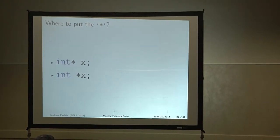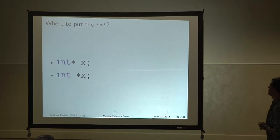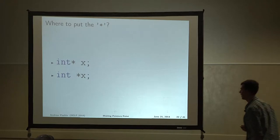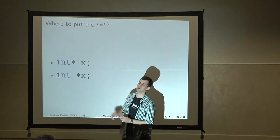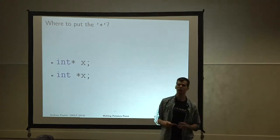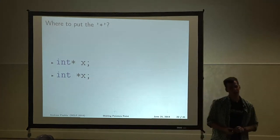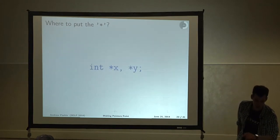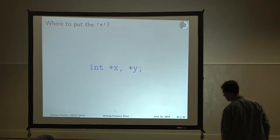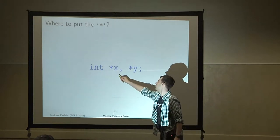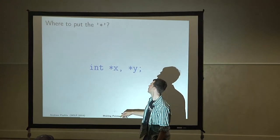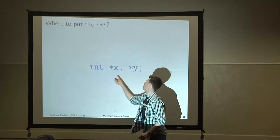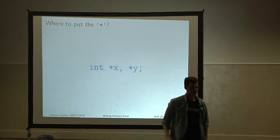One of the things you will see when writing C code is where the asterisk goes when you're declaring pointers. You might think you're making the type as an int pointer, but that's not how C does it. The asterisk is bound to the variable it is next to. So if you put a star with an int, it would only make the X a pointer. If that star wasn't there, Y would be a plain old integer instead.